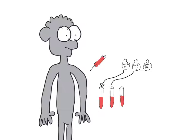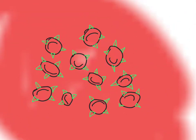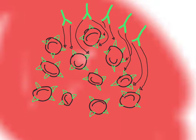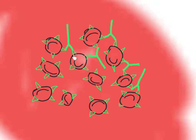If any of these antibodies are capable of attacking the blood, then we know that that patient has the antigen which that antibody can attack. In this example, let's say that only the anti-A antibodies cause this patient's blood to coagulate. If the anti-A antibodies are attacking this patient's blood, that must mean the patient has the A antigen on the surface of their red blood cells.